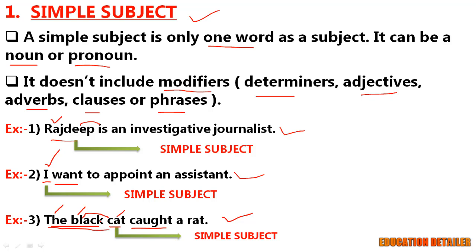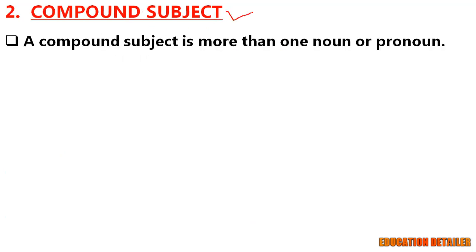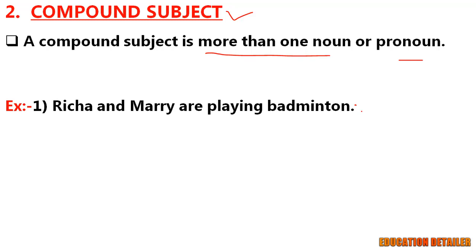Okay, now second type: compound subject. A compound subject is more than one noun or pronoun joined by a conjunction. Look at the first example: Richard and Mary are playing badminton. Here two people are performing the action: Richard and Mary. And they are joined by a conjunction.